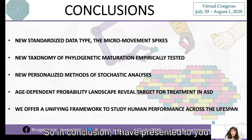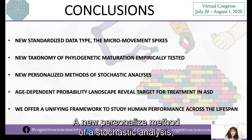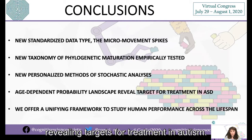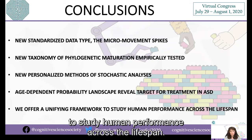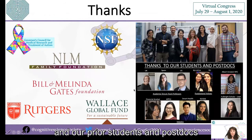In conclusion, I have presented a new standardized data type — the micro movement spikes — a new taxonomy of phylogenetic maturation empirically tested, a new personalized method of stochastic analysis, and an age-dependent probability landscape revealing targets for treatment in autism. In general, we offer a unifying framework to study human performance across the lifespan. I want to thank our multiple sources of funding and our prior students, postdocs, and current members of the lab. Thank you for attending our talk.